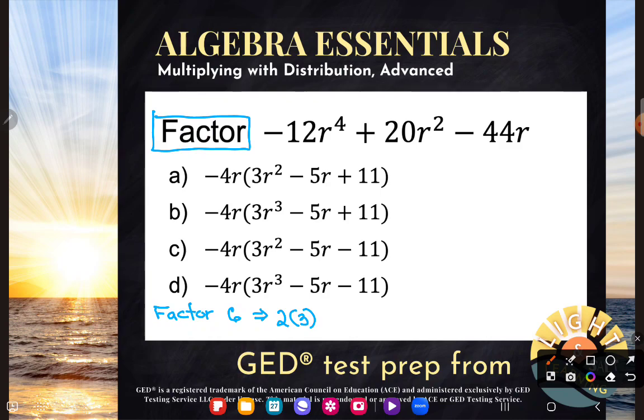So since it's basically working it backwards, going from the answer to the multiplication problem, we could take the answers and multiply them out to check which one matches, guess and check. So let's look at A. A has negative 4r multiplying across this whole grouping. Well, let's just do the multiplication and see if it simplifies to that.